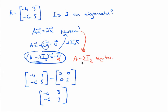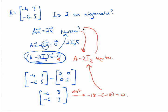This has non-zero solutions if and only if the matrix A minus 2I2 is non-invertible. If it were invertible, the only solution would be x equals 0. We can check non-invertibility using the determinant: the determinant of this matrix is negative 18 minus negative 18, which equals 0. So the matrix is non-invertible, and therefore there are non-zero solutions to this equation. The answer is yes — 2 is an eigenvalue, because there is some vector that makes the equation true, confirmed by the coefficient matrix having determinant 0.